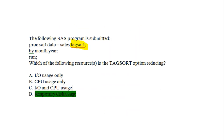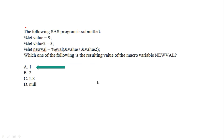The eighth question: given PROC SORT data=sales; by month year; run; — what does the TAGSORT option do? The TAGSORT option uses only temporary disk space for the sort process. This option can be used to reduce disk usage during sorting.